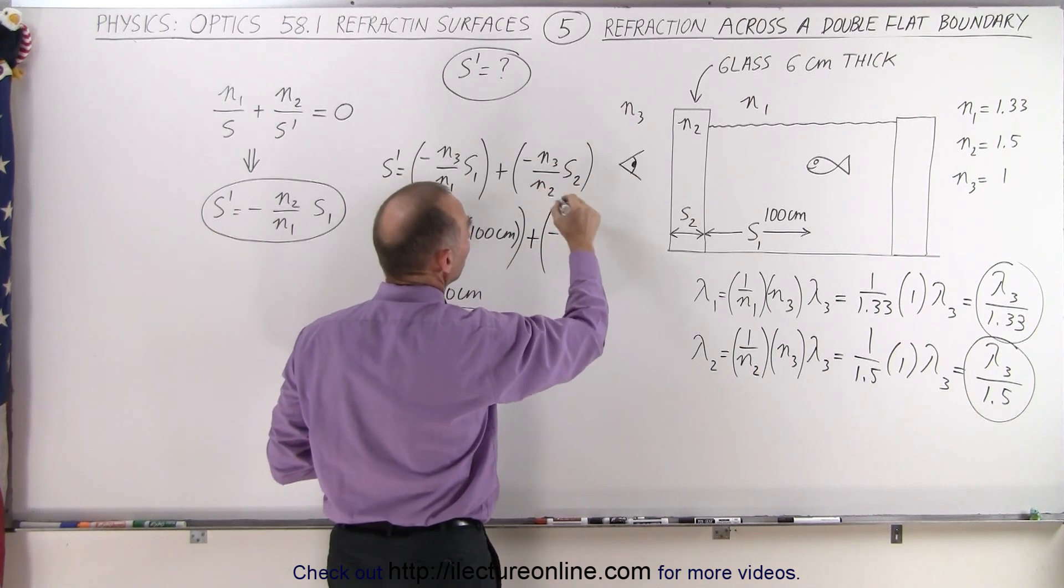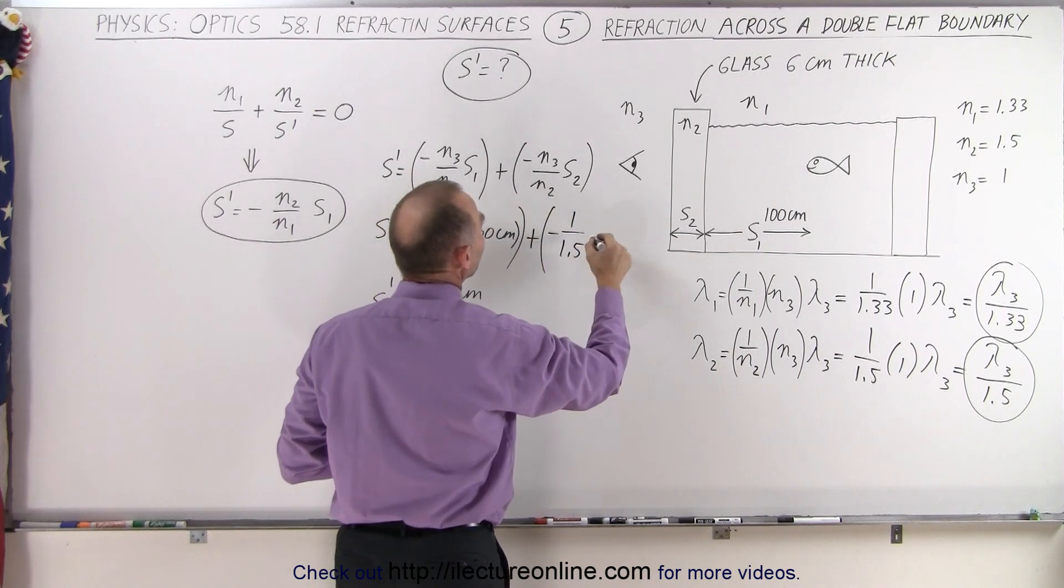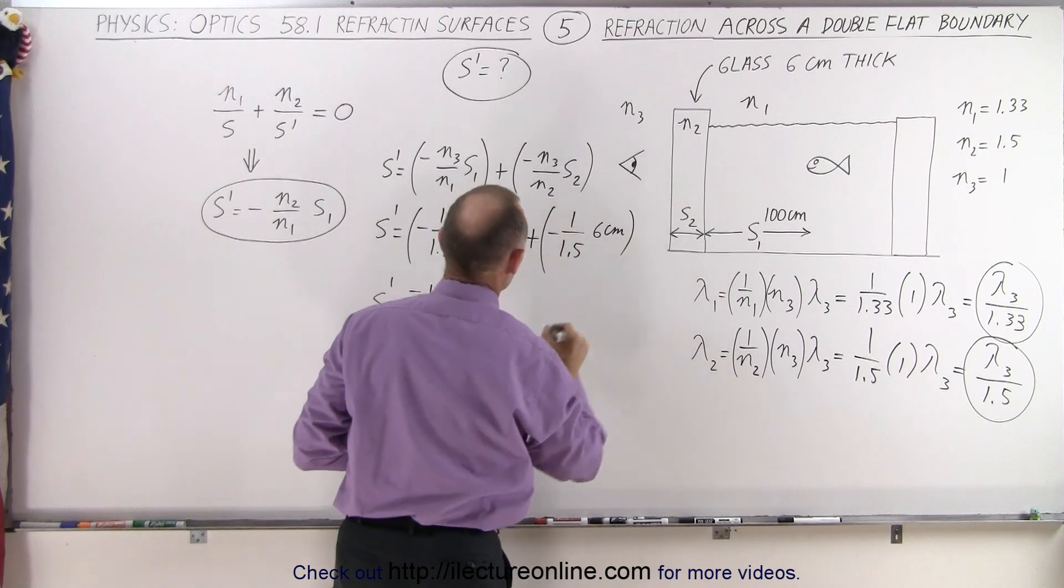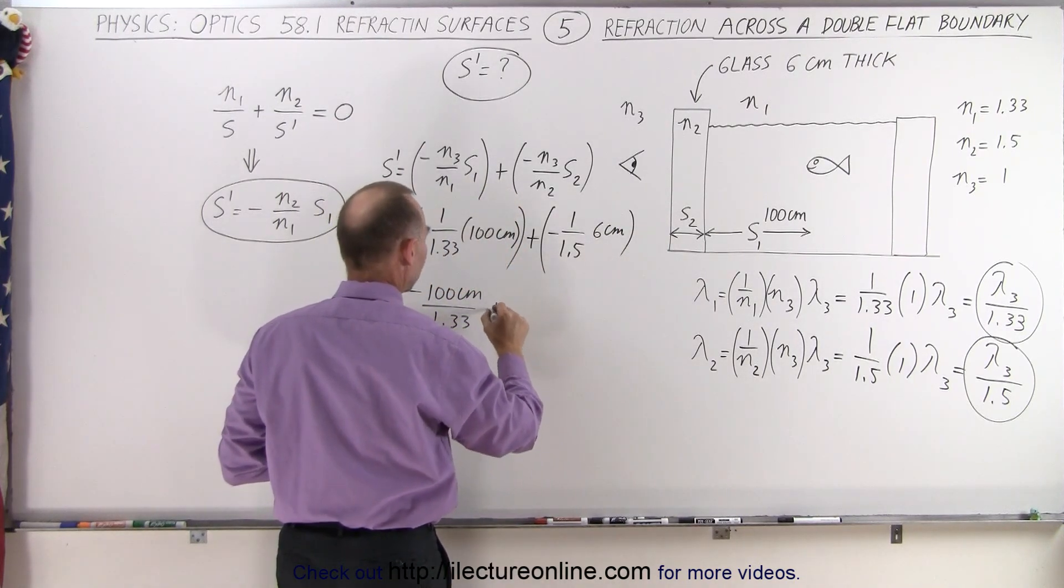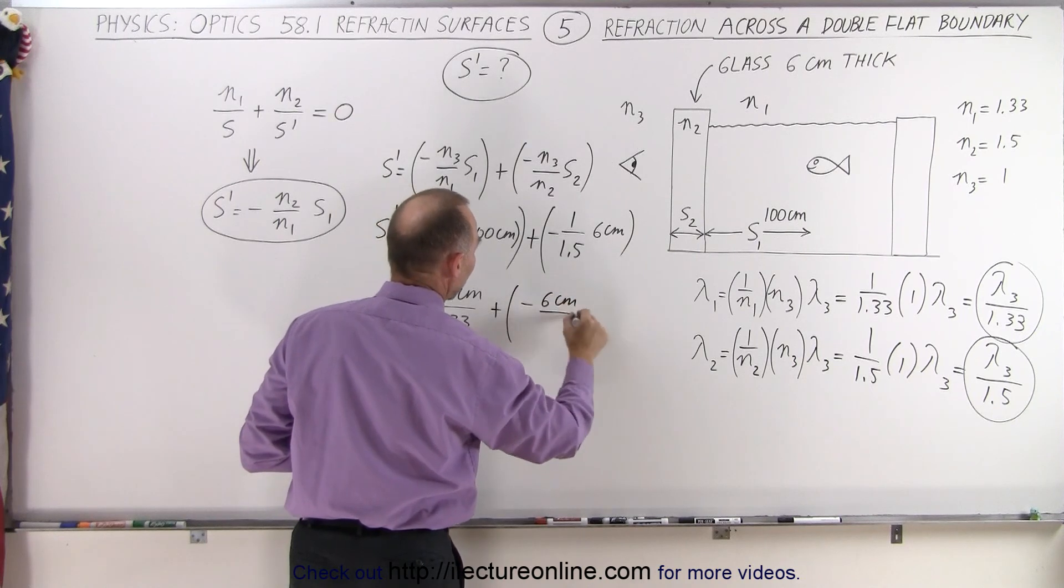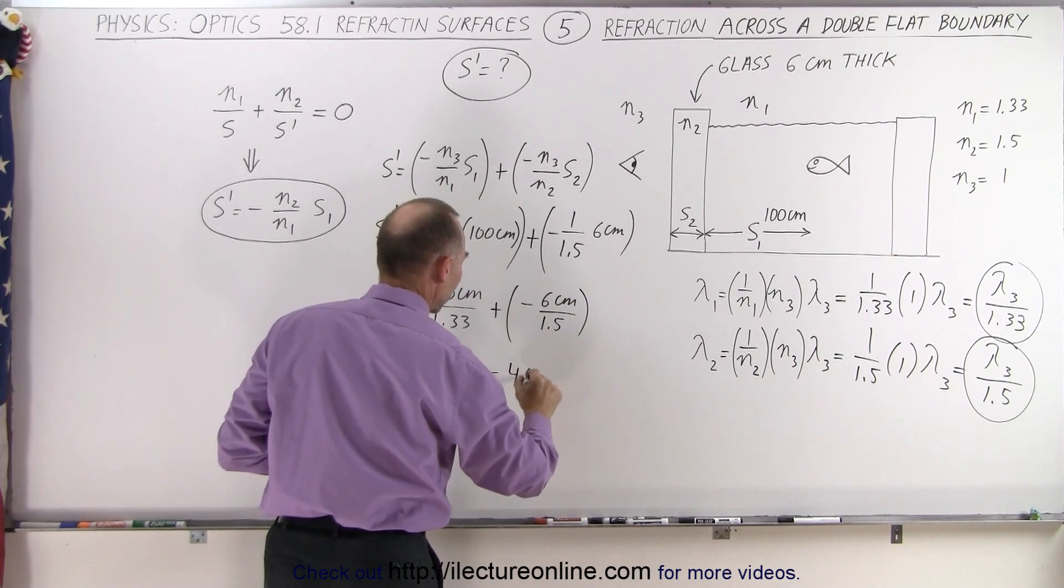Now we have to add to that the effect of the glass, which is minus N3, which is 1 over 1.5, the index of refraction N2, times S2, which is the distance through the glass, which is 6 centimeters. And so we have to then go plus a minus 6 centimeters divided by 1.5. And so that would be a minus 4 centimeters.